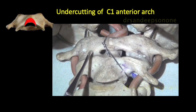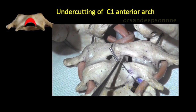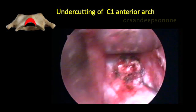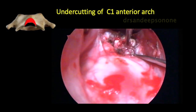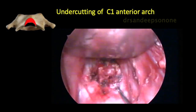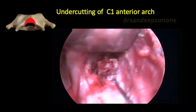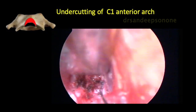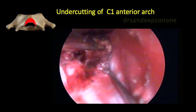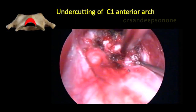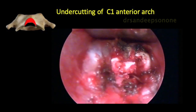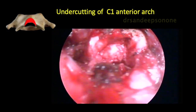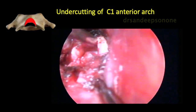The undercutting of the C1 arch is done to expose the odontoid tip or the dens. A lot of soft tissue and fibrous tissue which lies in between is removed, as seen in this video. The beauty of this approach is that you need not excise the C1 arch to reach the dens, because of the inherent angulation given by the approach. You can very easily undercut the posterior margin of the C1 tubercle to reach the tip of the dens.